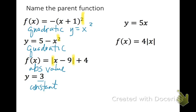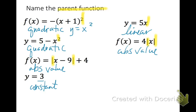y equals 5x — we just have x to the first power, and that means that this function's parent would be linear. And then f of x equals 4 times the absolute value of x — the math happening to x is the absolute value bars, so the parent function is absolute value. You're going to look at the math happening to the variable to determine the parent function and choose from the 4 types we've been studying.